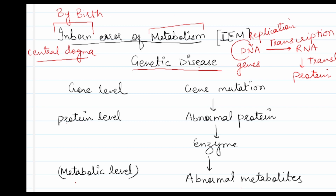So this is the central dogma: DNA converts to RNA, RNA converts to protein. If there is a mutation in a single gene, it will produce mutated RNA, and then mutated or abnormal protein. This abnormal protein will form an abnormal enzyme, and this enzyme will produce abnormal metabolites at the metabolic level.